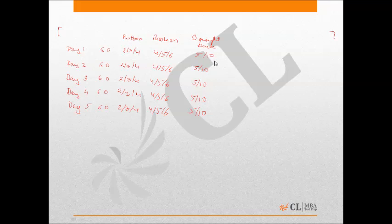Now let's find the minimum and maximum eggs that can be sold on Day 1. To minimize eggs sold, rotten, broken, and brought-back should all be maximum: 4, 6, and 10 respectively — a total of 20 not available for sale, leaving a minimum of 40 sold. To maximize eggs sold, rotten, broken, and brought-back should be minimum: 2, 4, and 5 — a total of 11 not sold, meaning 49 are sold. So on Day 1, a minimum of 40 and a maximum of 49 eggs can be sold.